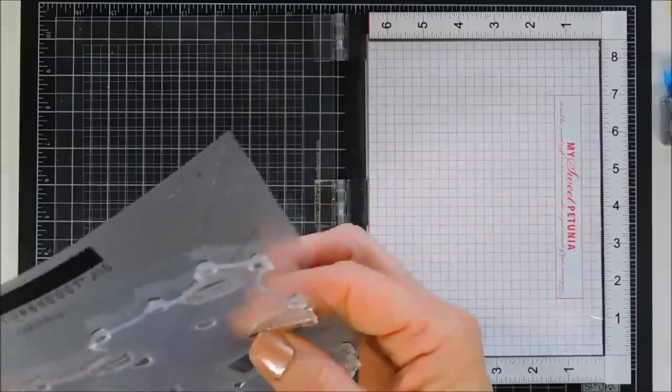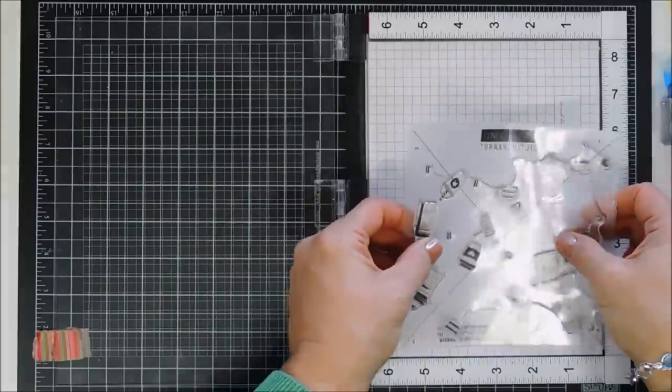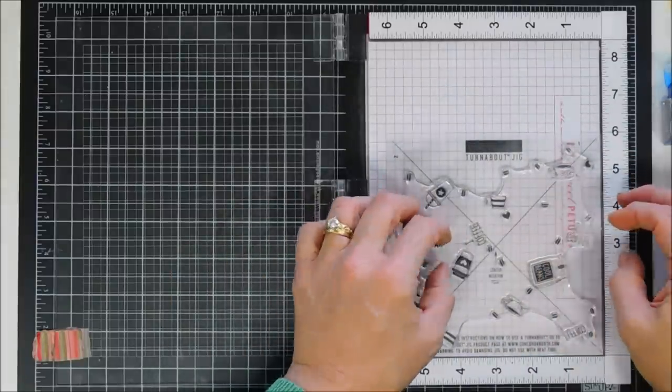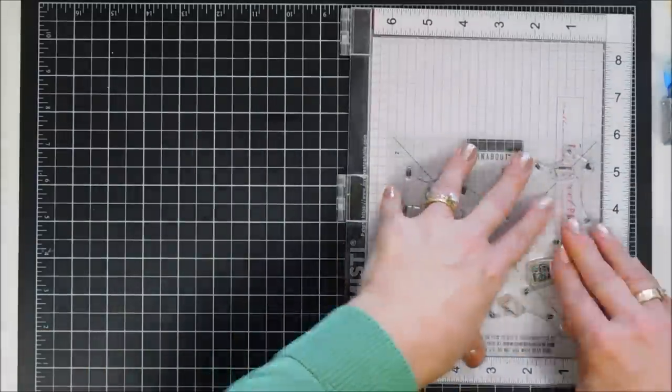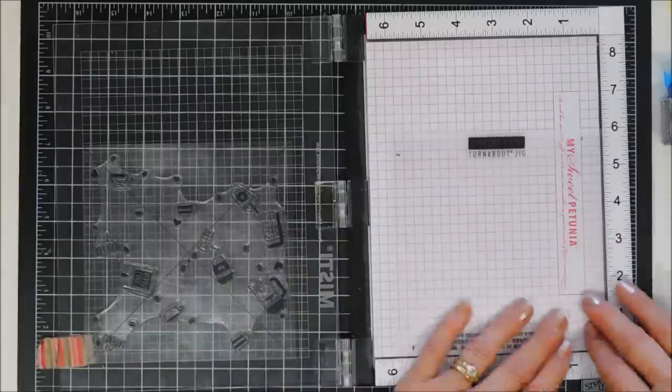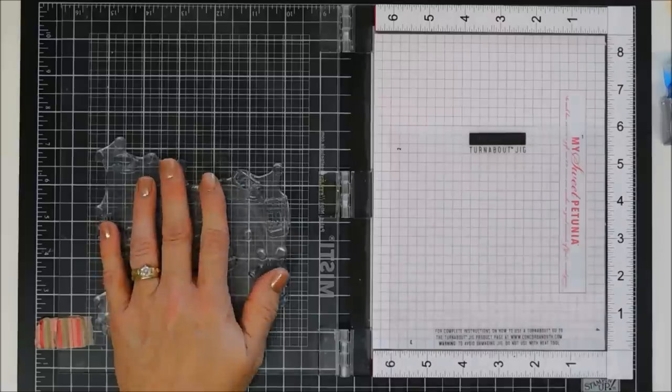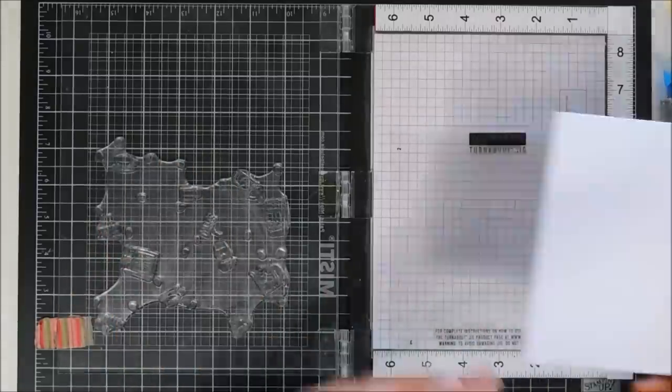I'm going to actually line up my stamp first. There's a dotted line that's X'd out on the turnabout jig and I'm lining my X on the turnabout jig with my X on my alignment guide. Then I can just close the lid of my MISTI and I know that my stamp is perfectly positioned on the lid of the MISTI. So easy peasy.